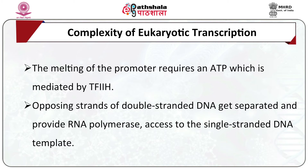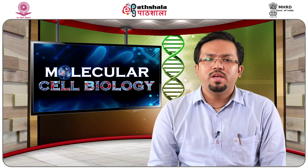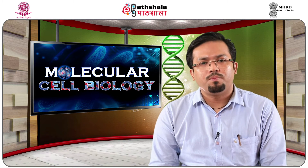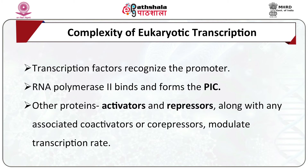TF2D is the first GTF to bind to the start site and TF2H is the last GTF; binding of TF2H completes the assembly of the transcription initiation complex. The pre-initiation complex containing all the GTFs is followed by melting of the promoter, requiring ATP mediated by TF2H. TF2H is involved in separating opposing strands of the double-stranded DNA to provide RNA polymerase access to the single-stranded DNA template. However, only a low or basal rate of transcription is driven by the pre-initiation complex alone. Transcription factors recognize the promoter, RNA polymerase 2 then binds and forms the pre-initiation complex, while other proteins known as activators and repressors along with co-activators and co-repressors are responsible for modulating the transcription rate.